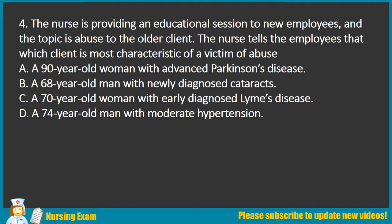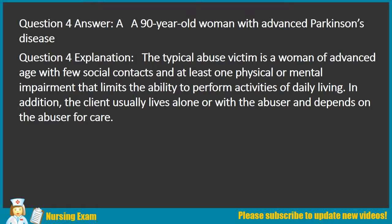Question 4. The nurse is providing an educational session to new employees on abuse to the older client. Which client is most characteristic of a victim of abuse? A. A 90-year-old woman with advanced Parkinson's disease. B. A 68-year-old man with newly diagnosed cataracts. C. A 70-year-old woman with early diagnosed Lyme's disease. D. A 74-year-old man with moderate hypertension. Answer: A. A 90-year-old woman with advanced Parkinson's disease.